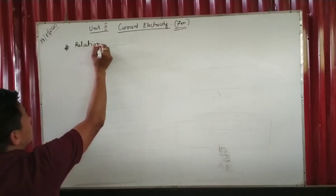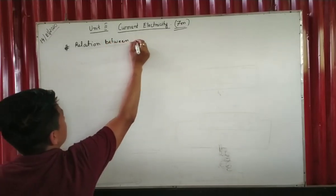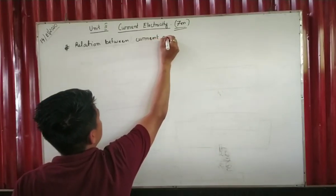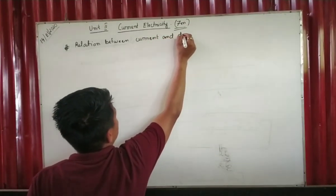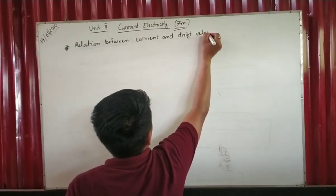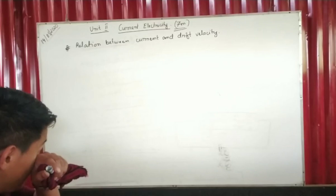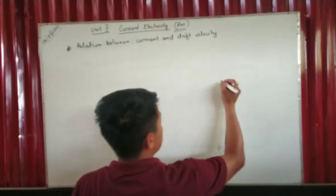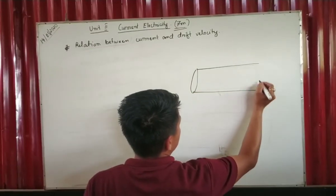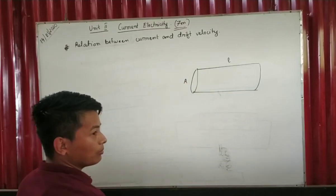This is the relation between current and drift velocity. The drift velocity applies only within the conductor. Consider a conductor with cross-sectional area A.